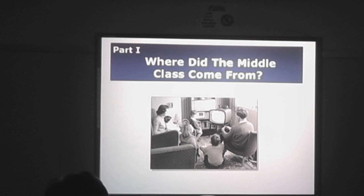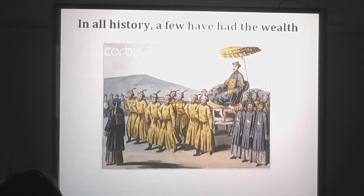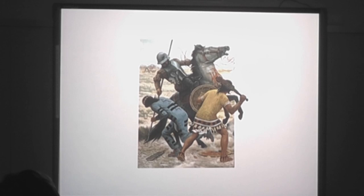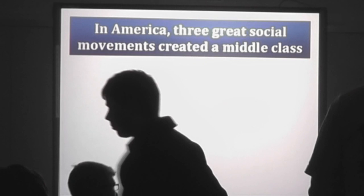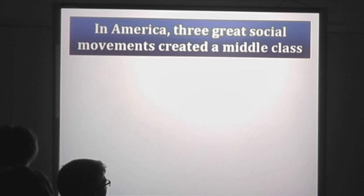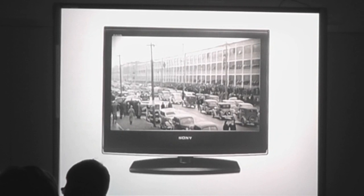The first part of the presentation is: where did the middle class come from? That is, where did the 99% come from? We want to be aware that there were major differences within the 99% as well as within the 1%. America was supposed to be different from that historical pattern. In America, three great social movements created a middle class: the labor movement, the civil rights movement, and the women's movement.